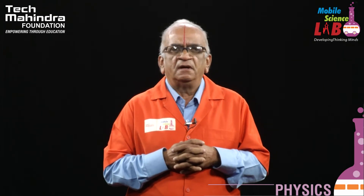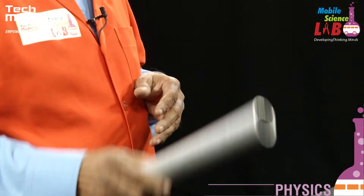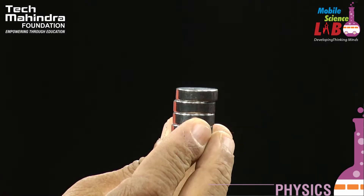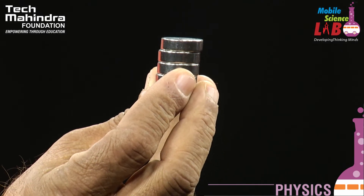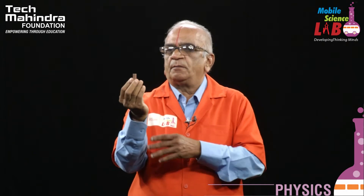To perform this experiment, we need a few apparatus: they are an aluminum pipe, these are powerful neodymium magnets, and this is the copper cylinder.